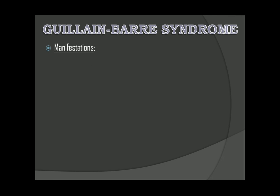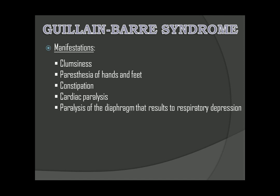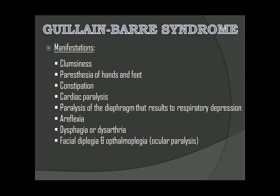Manifestations: clumsiness is the first common symptom due to weak muscle extremities. Paresthesia of hands and feet. Constipation due to decreased peristalsis. Cardiac paralysis. Paralysis of the diaphragm resulting in respiratory depression. Areflexia, or the absence of reflexes. Dysphagia or dysarthria — the disarticulation of words or speech caused by impaired muscle control. Facial diplegia, possibly accompanied by ophthalmoplegia or ocular paralysis.